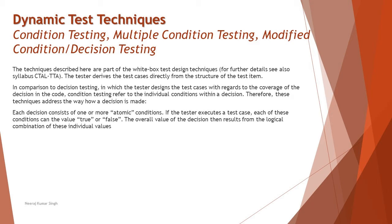In comparison to decision testing, where the tester designs test cases with regards to coverage of decisions in the code, condition testing refers to the individual condition within a decision. For example, if a condition uses an 'if' statement, it may have two outputs — true or false — where true meets the condition and false does not. Testing only one part, say true, means the condition is tested but 100% decision coverage is not achieved. In foundation you have already covered and understood more about these.